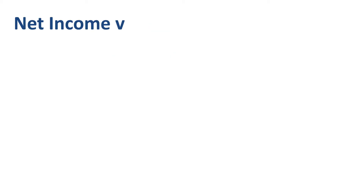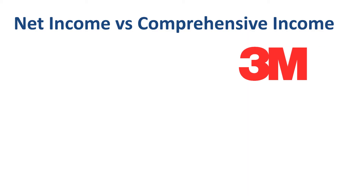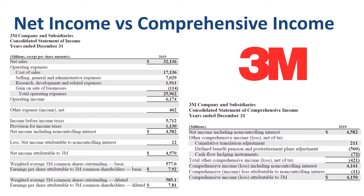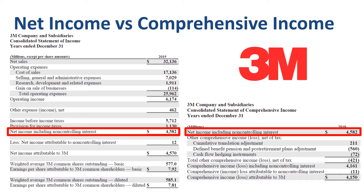As a first example, let's look at the consolidated statement of income and the consolidated statement of comprehensive income of 3M. The linking pin between the income statement on the left and the statement of comprehensive income on the right is net income. The $4.6 billion net income near the bottom of the income statement is the same $4.6 billion at the top of the statement of comprehensive income.